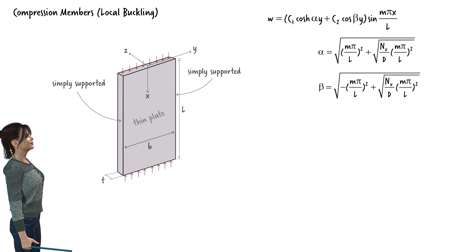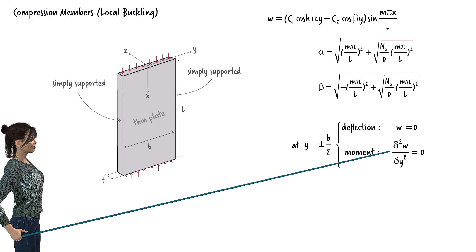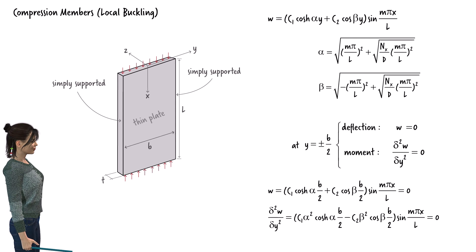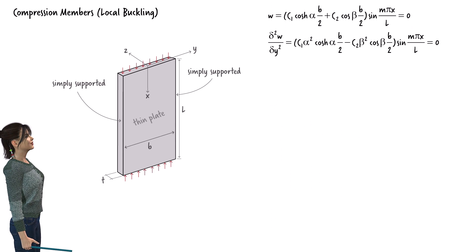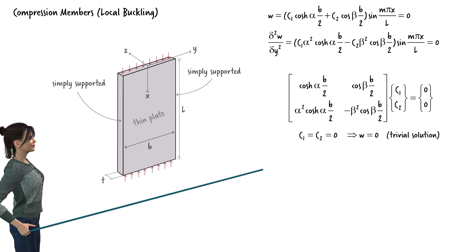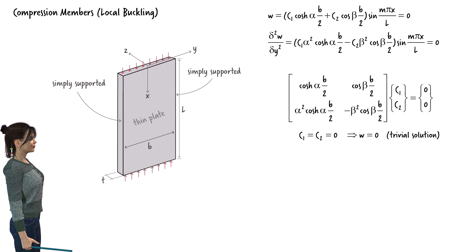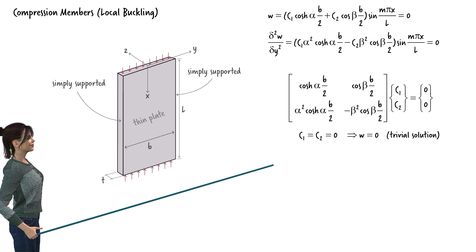At the simply supported edges, two boundary conditions can be imposed. At y equals plus or minus b over 2, deflection w is 0 and bending moment equals 0, giving us two equations. In matrix form, this linear system of equations has a trivial solution: C1 equals C2 equals 0. This results in a zero deflection function, which does not help us determine the plate's buckling load. Fortunately, there is also a non-trivial solution, which exists when the determinant of this matrix is 0.